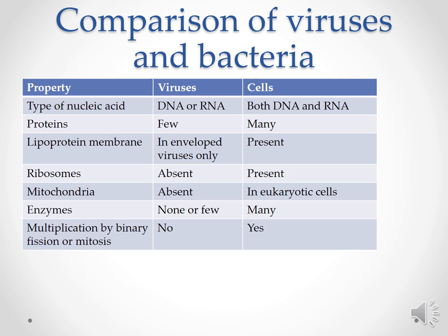Phagocytosis is absent in viruses but present in eukaryotic cells. Enzymes are few in viruses, while there are many enzymes in bacteria. Multiplication by binary fission does not happen in viruses, but bacterial cells undergo binary fission.